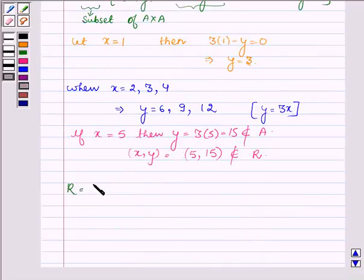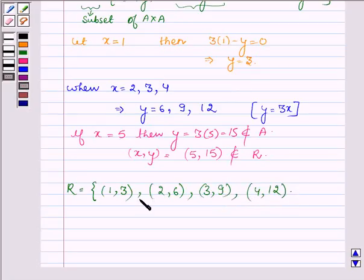Thus, the relation R will have elements (1,3), that is when X is 1 then Y is 3. When X is 2, Y is 6. When X is 3, Y is 9, and when X is 4, Y is 12. Now, let us find the domain of R. Domain of R will be the set of elements which are the first elements of these ordered pairs.